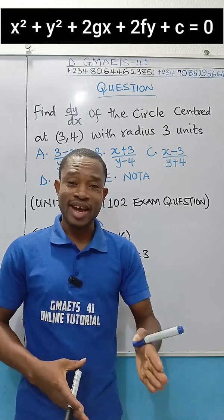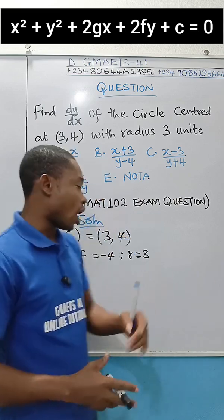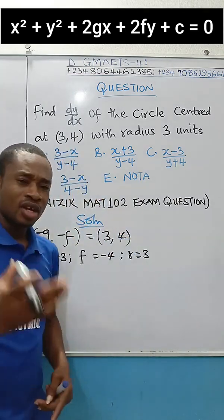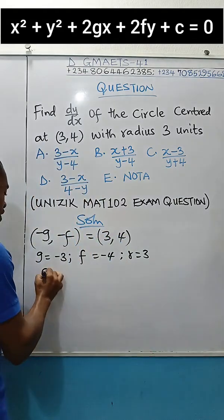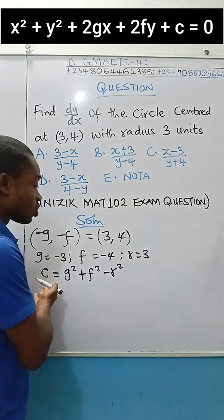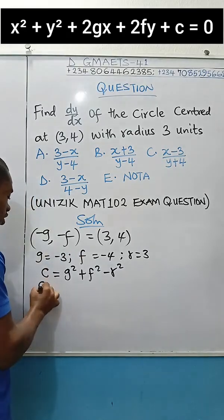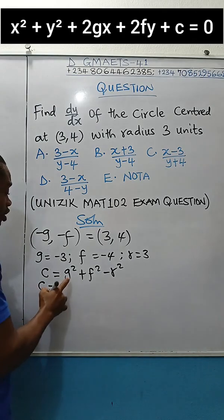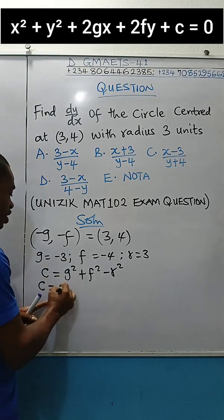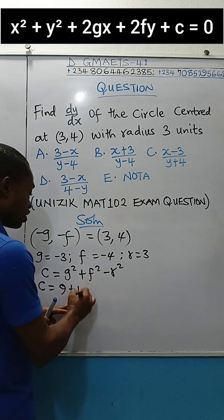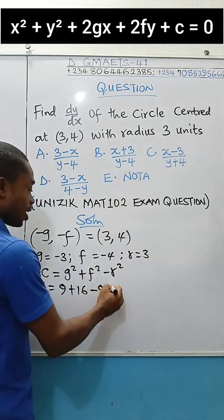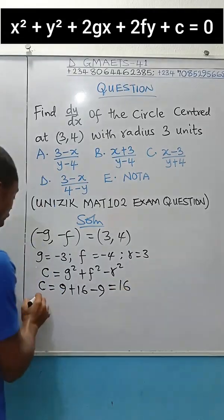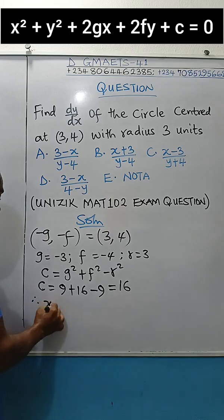So all we just have to do is get that equation of the circle. We know our g already, we know our f. I'll quickly have to get c. Now, how do we obtain c? Recall that c is equal to g² + f² - r². To get that c, g² is going to give us 9 plus f² is going to give us 16 minus r² is going to give us 9, and of course our c is equal to 16.